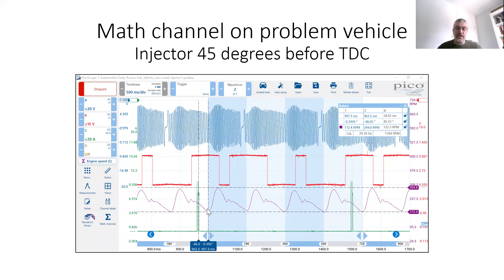So let's go back to our problem vehicle. And straight away, you can see in the math channel, we can see where TDC is. And so we can see the slowest point for each cylinder is all equal. So our compressions are all equal. But you can also notice that the injector isn't firing at TDC.